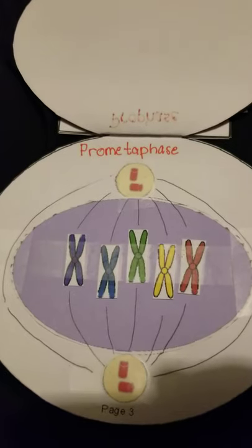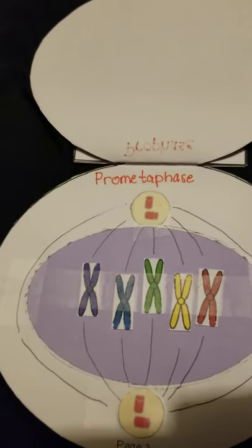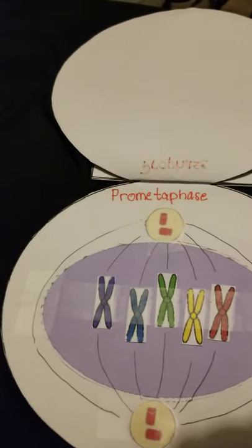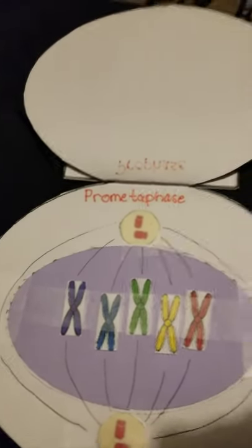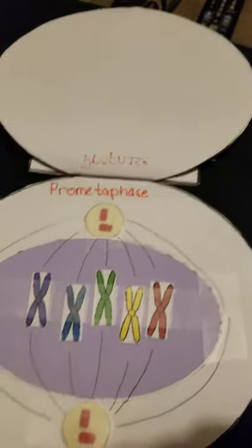In the second stage of mitosis, pro-metaphase, the nuclear membrane is broken down and the spindle microtubules now have access to the genetic material in the middle.